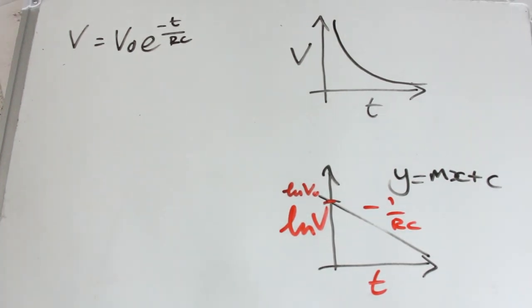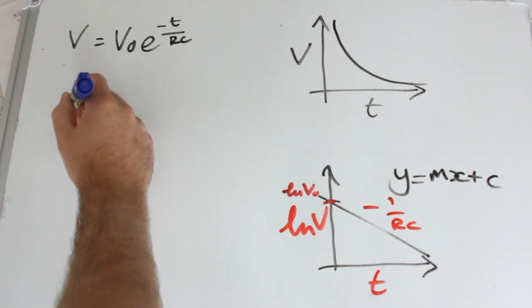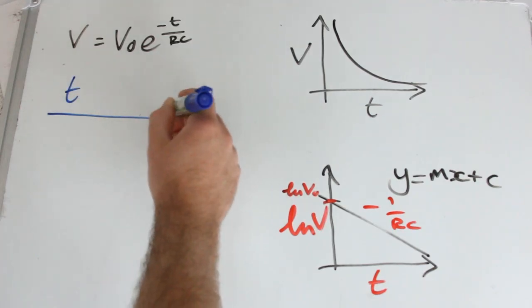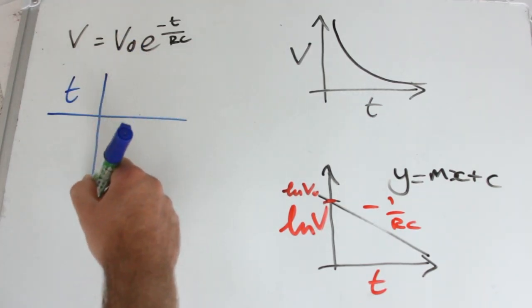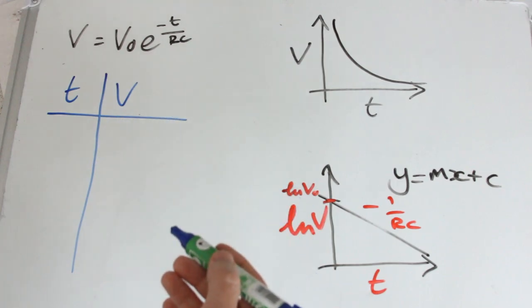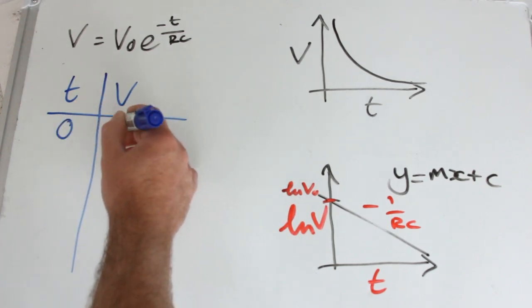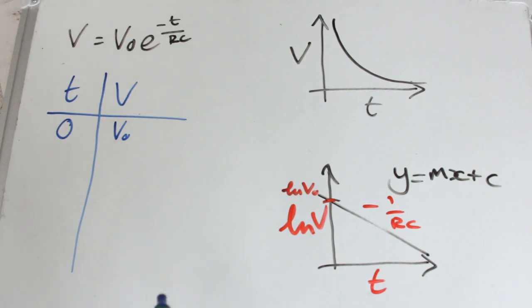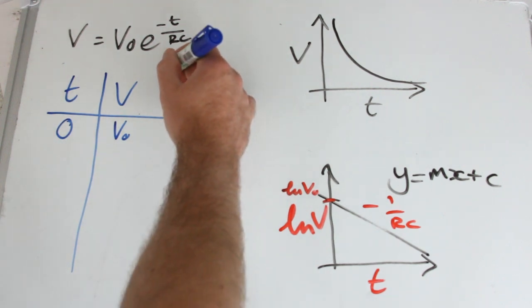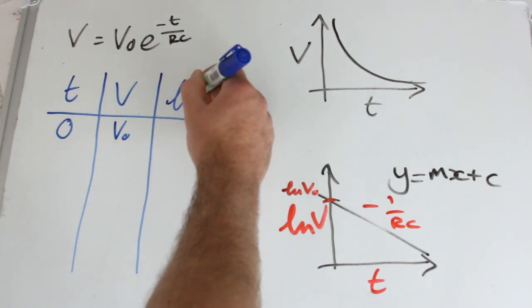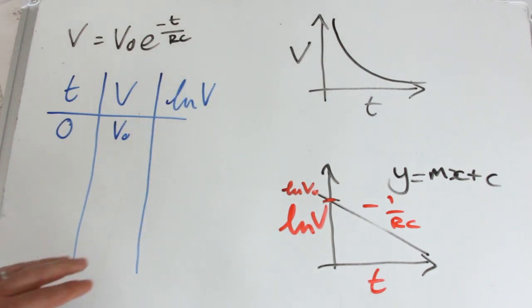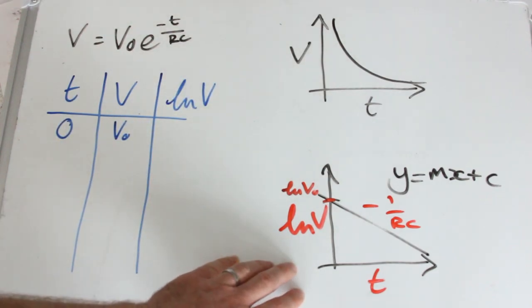In practice then, what you're going to do with any capacitor discharge circuit, you're going to take a set of readings for time, a set of readings of voltage with obviously time 0, that is V0. Okay, and then ln Vs so that you can plot the straight line graph there.